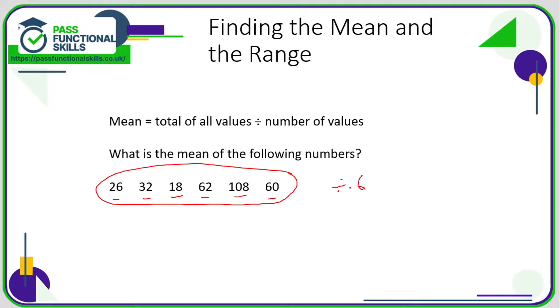26 plus 32 plus 18 plus 62 plus 108 plus 60 - that comes to 306. So 306 divided by 6 comes to 51. The mean of these numbers is 51. I've added them all up and divided by six because there were six numbers.